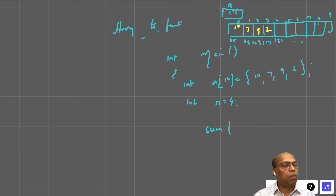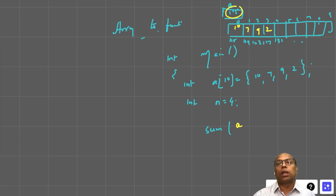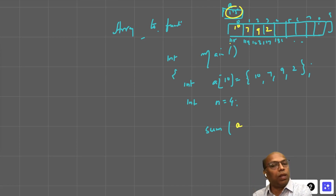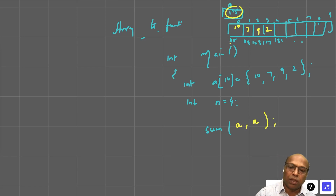When passing an array to a function, you don't need to pass the whole array — just the array name, which passes the first address. But since you only have the first address and can keep going to the next block by adding one, you must also supply the stopping point — the number of elements n.